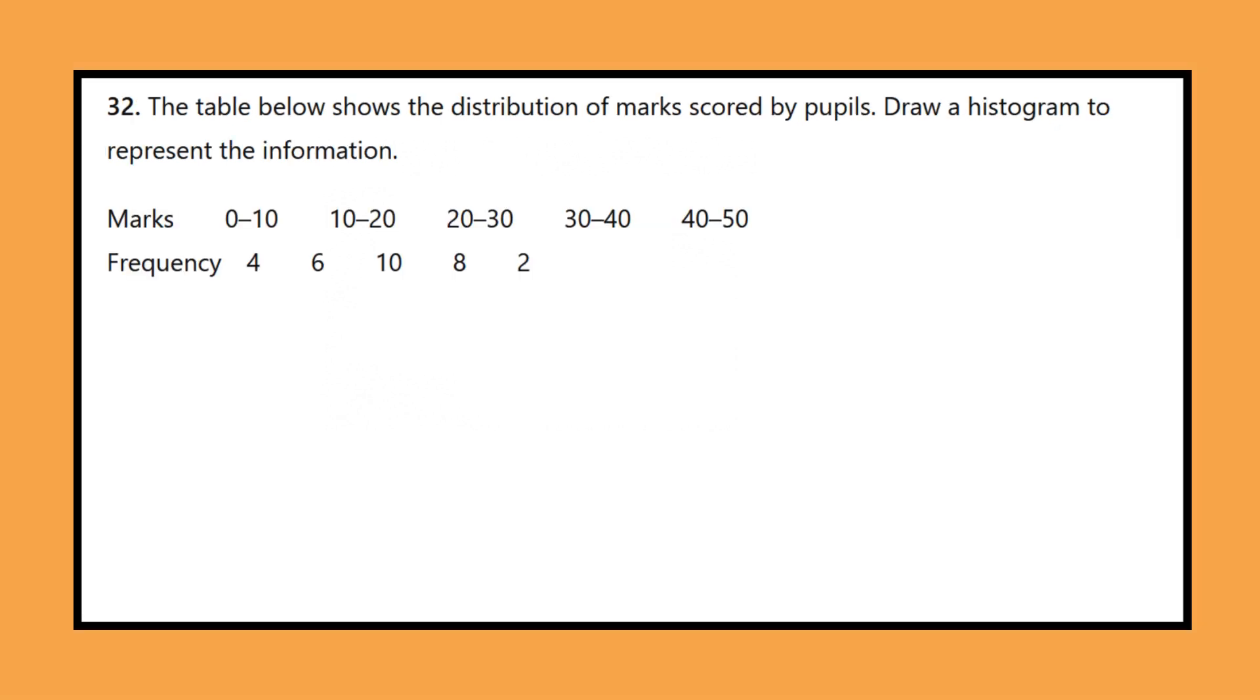Question 32: The table below shows the distribution of marks scored by pupils. Draw a histogram to represent the information. Marks 0 to 10, 10 to 20, 20 to 30, 30 to 40, 40 to 50. Frequency 4, 6, 10, 8, 2.